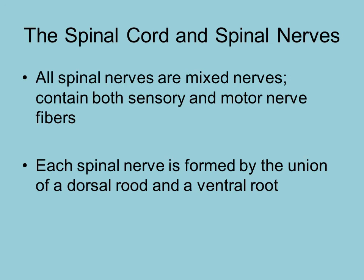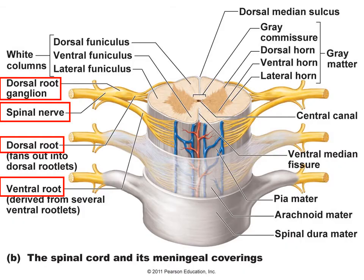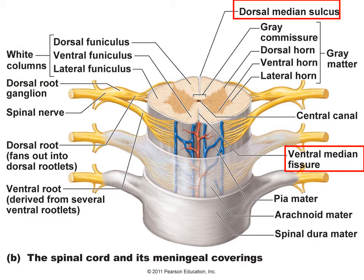All of those spinal nerves are mixed nerves, meaning they contain both sensory and motor fibers. The spinal nerve is formed by the union of the dorsal root and the ventral root, which merge together to form the spinal nerve. The dorsal root carries sensory fibers and the ventral root carries motor fibers, but as they merge to form the spinal nerve, the result is a mixed nerve. The ventral median fissure and dorsal median sulcus are also visible for orientation.